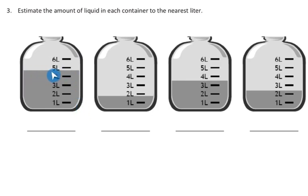That's where the dark gray line is. And as you can tell from the first container, it is closer to 5 liters than it is 4 liters, so the answer for that is 5 liters, or 5, capital L.